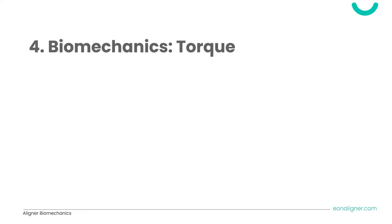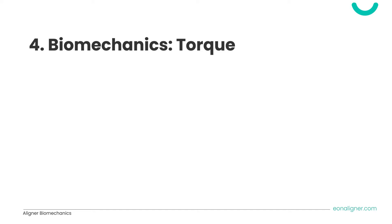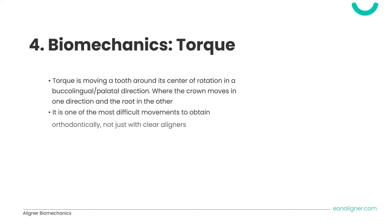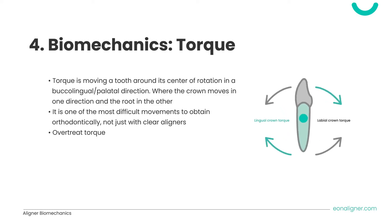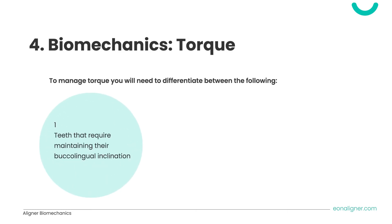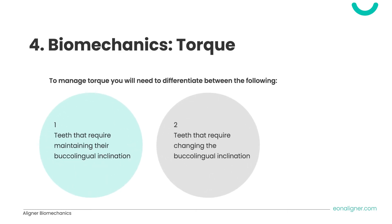Moving to the fourth movement: torque, sometimes referred to as inclination. Torque is moving a tooth around its center of rotation in a buccolingual or palatal direction, where the crown moves in one direction and the root in the other. It is one of the most difficult movements to obtain orthodontically, not just with clear aligners. Therefore, it is advisable to overtreat torque movements to compensate for any lag that could happen.